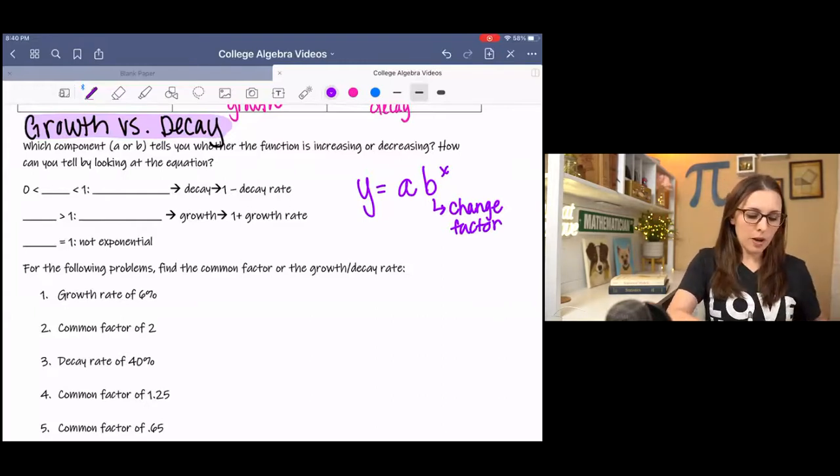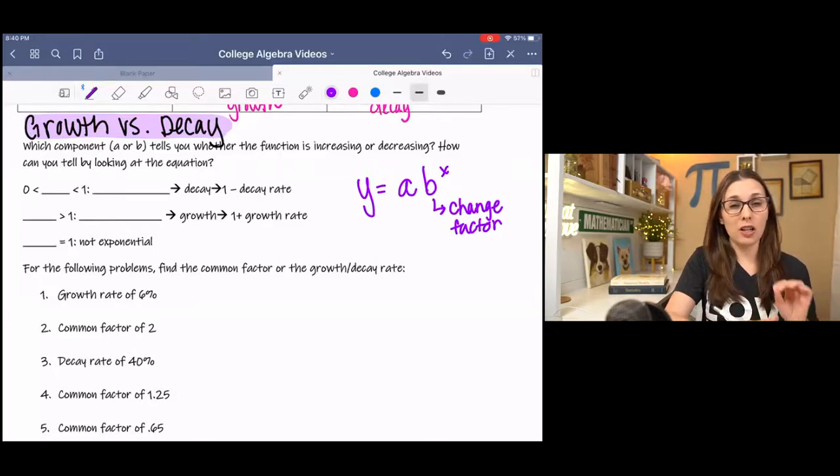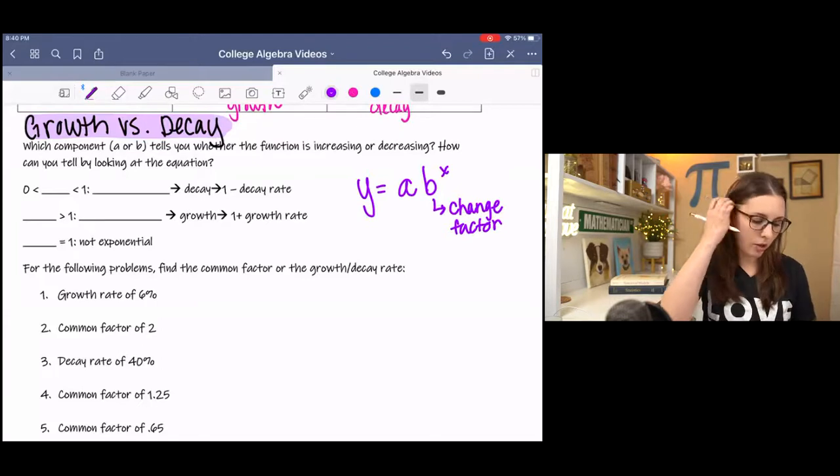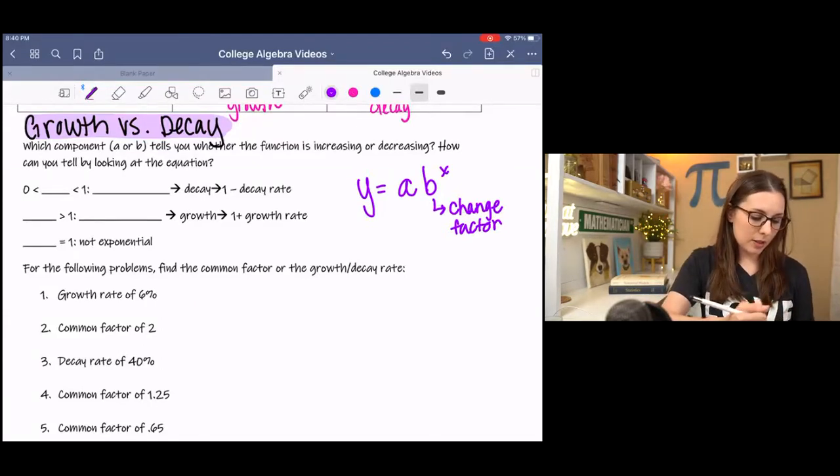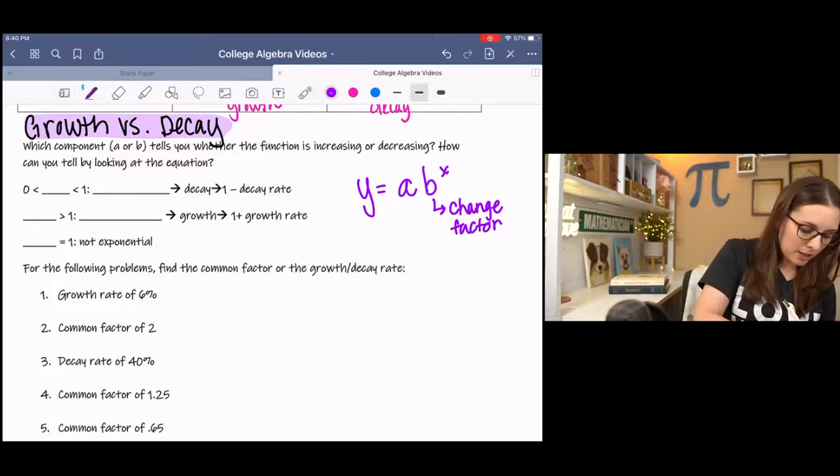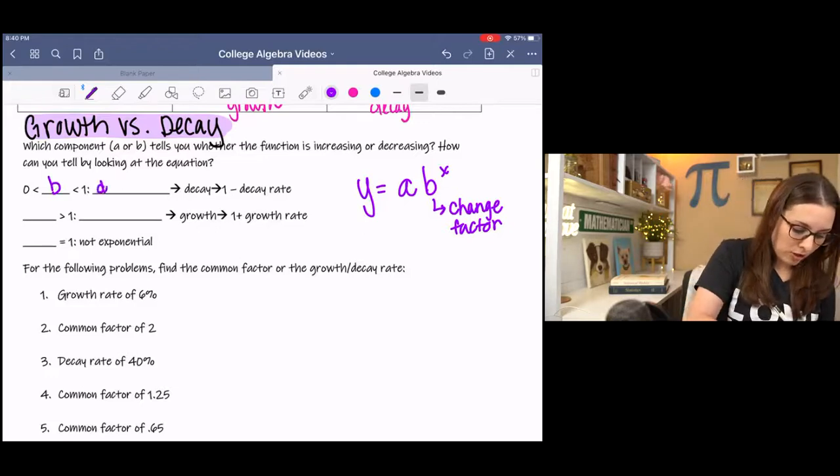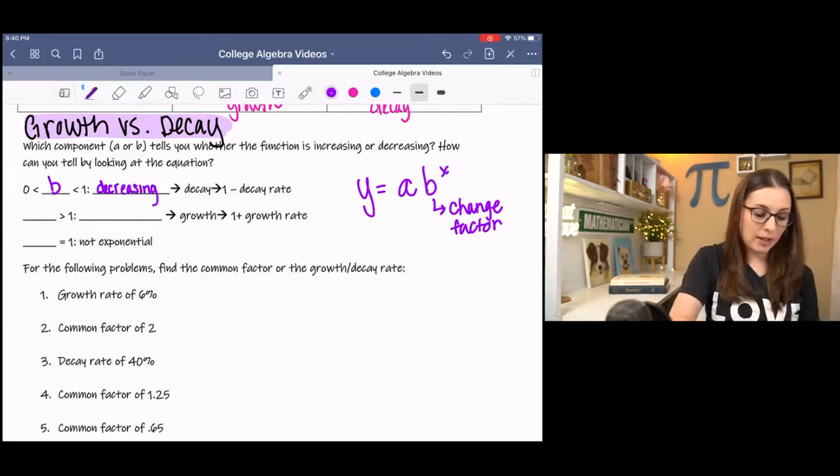When we talk about a change factor, there's certain characteristics that can tell us whether it is exponential growth or decay, and I touched on it in my last video. So b is going to be the one that's telling you whether the function is increasing or decreasing, and if b is between 0 and 1, then that means the function is decreasing and indicates decay.